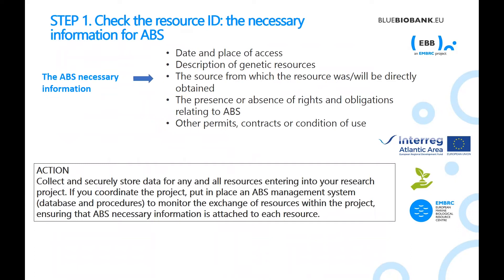Step one involves checking the necessary information for ABS on the genetic resource. Before starting their project, users should collect and check the following critical information: the date and place the resource was accessed from, or will be if not yet obtained; a description of the genetic resource; the source from which the resource was or will be directly obtained, including if obtained from a third party; and the presence or absence of rights and obligations relating to ABS, and any other permits, contracts or conditions of use. It is recommended that users collect and securely store data for any and all resources entering into the research project.